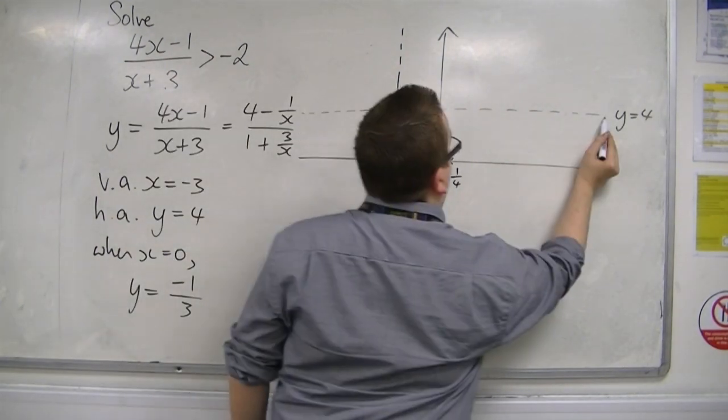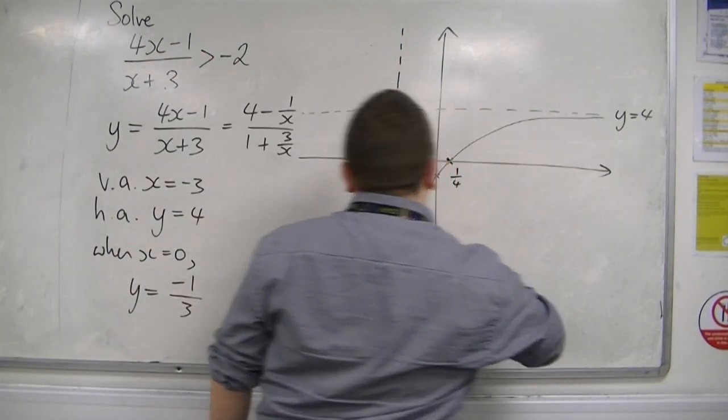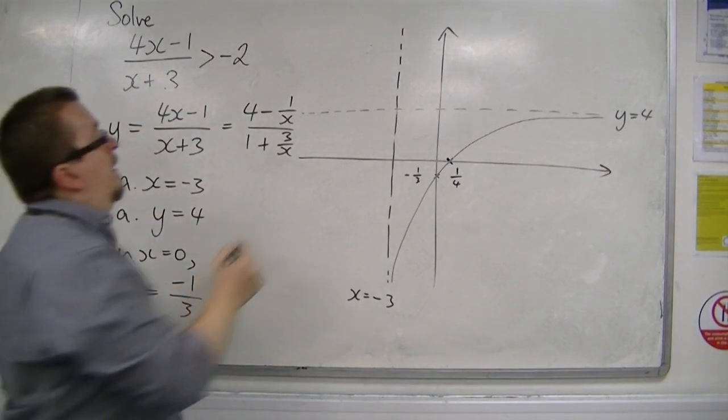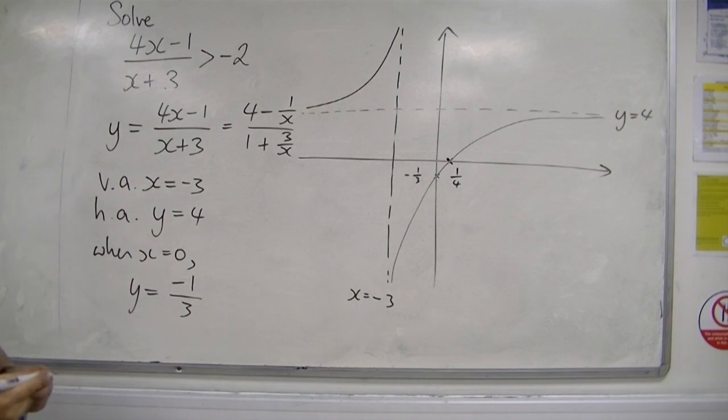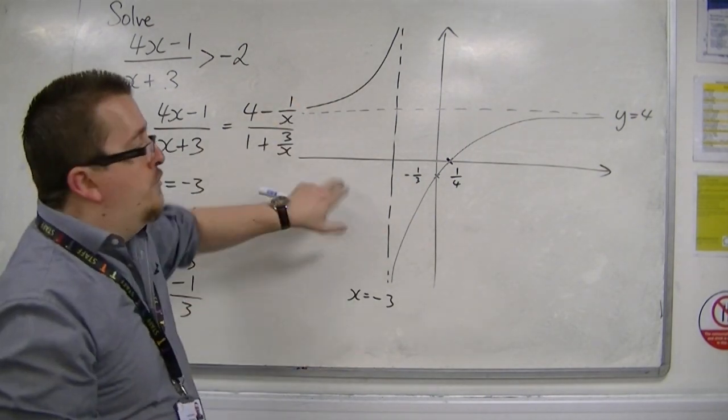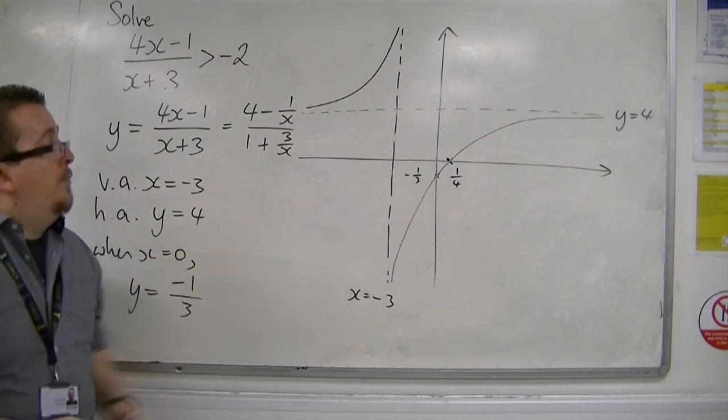So the curve must be doing something like that, and therefore it must be up there for that portion of the graph, because it can't cross the x-axis to the left with minus 3. Okay, so that's my curve.